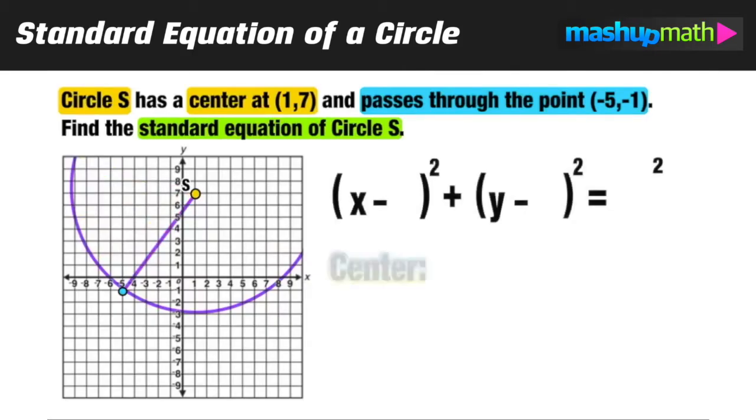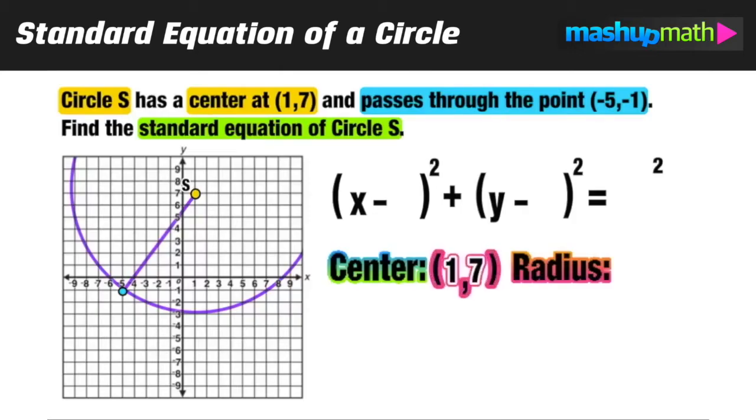To find the standard form equation of circle S we need two pieces of info: the location of the center and the length of the radius. The center point was already given at (1,7) so we can go ahead and fill in those values.